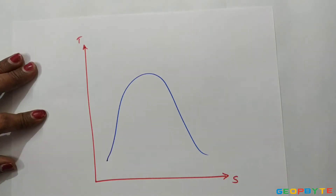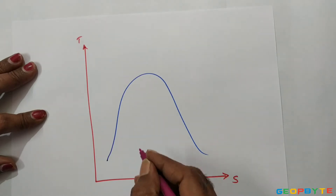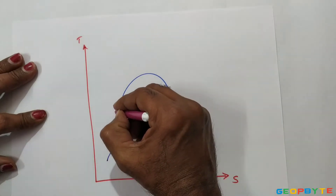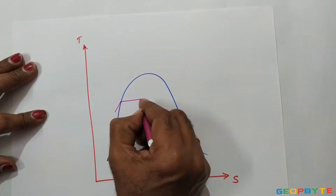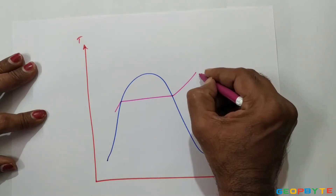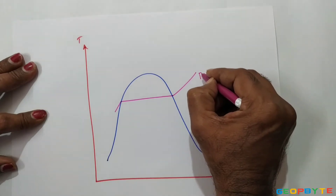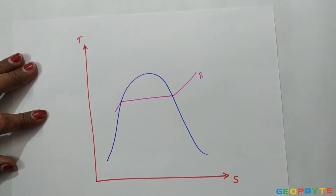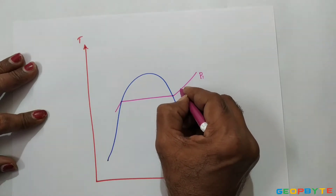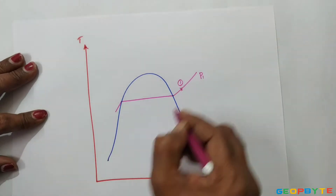Let us construct the T-S diagram for reheating of the steam in a reheating steam turbine. The steam is entering the turbine under high pressure in a superheated condition — this may be the initial state of the steam.